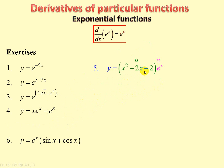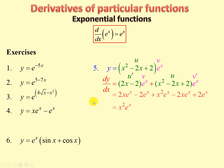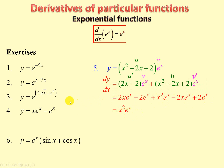Exercise 5 is another product rule. When we differentiate u, we get 2x minus 2. When we differentiate v, we get e to the x. Applying u prime v plus u v prime and multiplying out, the other terms cancel one another out, and it ends up being only x squared e to the x.